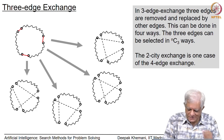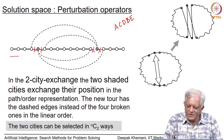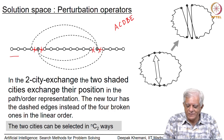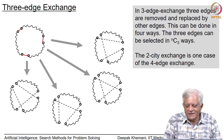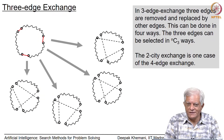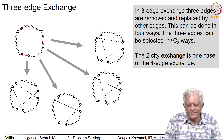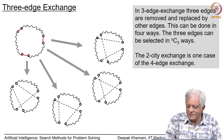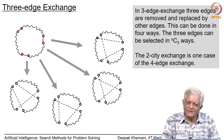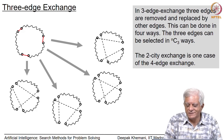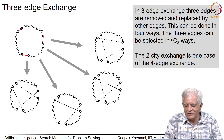Going back to the two-city exchange, you can see that it is essentially removing four edges and putting back four edges, so it is just a special case of four-edge exchange. If you remove four edges in n choose 4 ways, you could put them back in many ways — which is left as an exercise — but the two-city exchange is just one of the neighbors generated by a four-edge exchange.